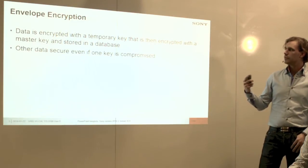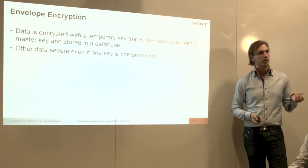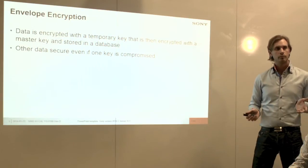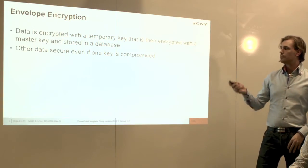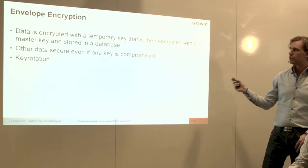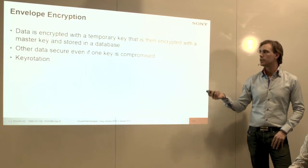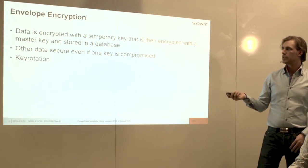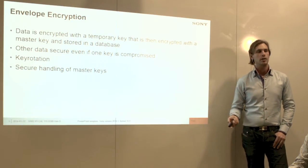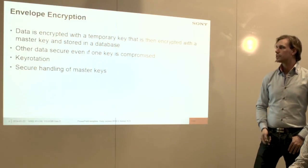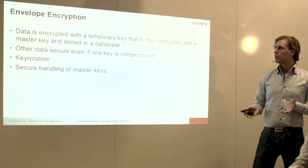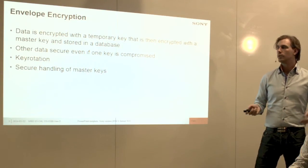This is called envelope encryption because it's an analogy where you put an envelope inside an envelope inside an envelope. You can take this as far as you want. So we have a master key that we encrypt our temporary keys with, and we use the temporary keys to encrypt our data. Even if one temporary key is compromised, you can only decrypt the data encrypted with that key — all other data is still safe. The only thing you have to protect is the master key. If the master key is compromised, you're screwed. The temporary keys can be treated as any form of encrypted data — you can store them everywhere, since they're encrypted.